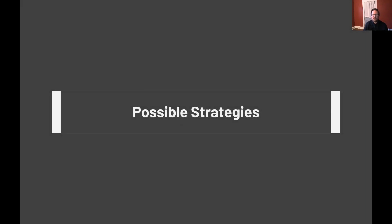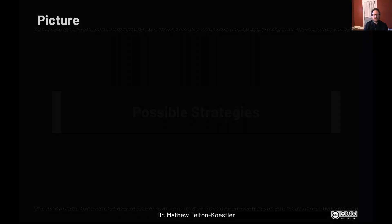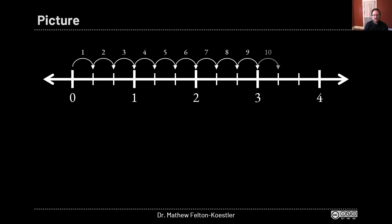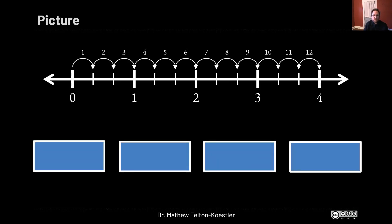Alright, so how did you think about this problem? Let's look at a few possibilities that I thought you might have used. I almost always draw a picture as one of my first strategies — it really helps me think about what's going on. So maybe you drew a number line going from zero miles to four miles, and then you subdivided those into thirds because each lap is only one-third of a mile. And finally, you could have counted the number of laps it took to go the whole distance. Or maybe you drew your miles as rectangles instead, and then subdivided and counted the number of pieces you had.